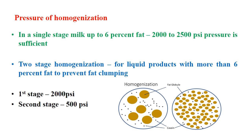Here we will see the pressure required for homogenization. In case of single stage homogenization, if the milk has up to 6% fat, 2000 to 2500 psi pressure is sufficient. In case of two-stage homogenization, used for liquid products or milk with more than 6% fat to prevent fat clumping, the first stage will be 2000 psi and the second stage will be 500 psi. In the diagram, we can see fat globule sizes before and after homogenization, with casein molecules visible as the dispersed colloidal phase.